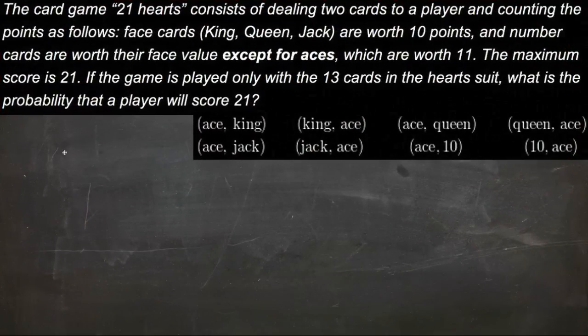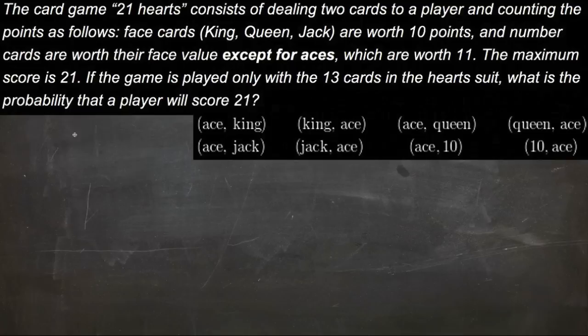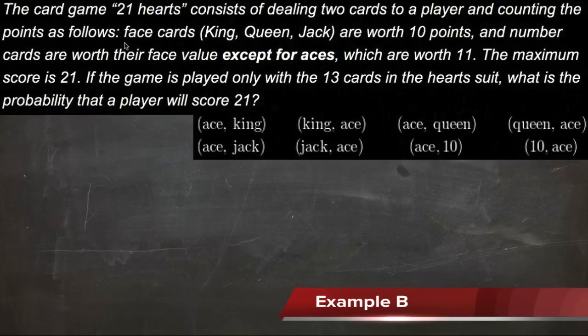To see how probability and permutations work together, let's take a look at this word problem. The card game 21 Hearts consists of dealing two cards to a player and counting the points as follows.